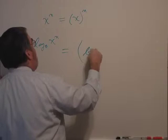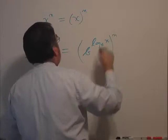So I'll keep that in parentheses. x is b to the log base b of x, and then this is all raised to the n.